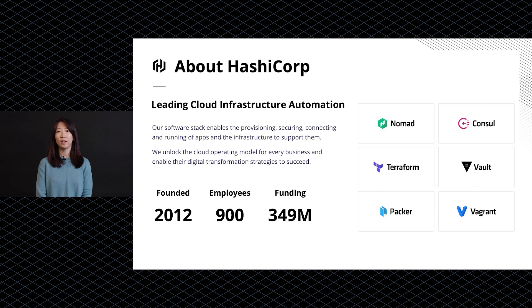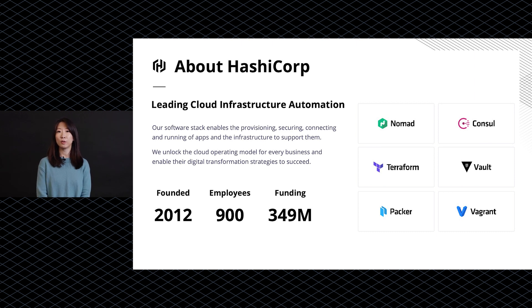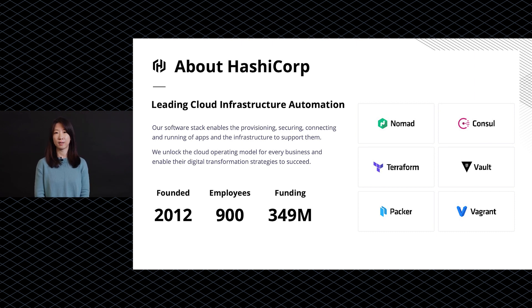Hi, I'm Chang Li. I work at HashiCorp. In this video, I want to walk you through the cloud operating model with a focus on the application deployment layer. We are HashiCorp, a company that provides a set of cloud infrastructure automation solutions across all the critical layers to help organizations find a fast path to cloud and accelerate their application delivery process.